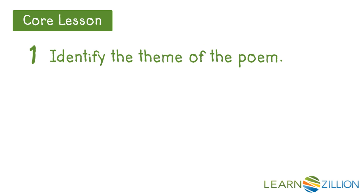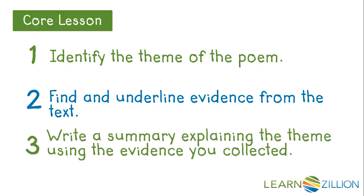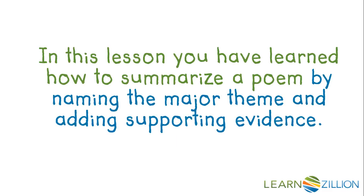In this lesson, we identified the theme of the poem. Then we found some evidence and underlined it in the text. And last, we wrote a summary explaining the theme using the evidence we collected. In this lesson, you have learned how to summarize a poem by naming the major theme and adding supporting evidence.